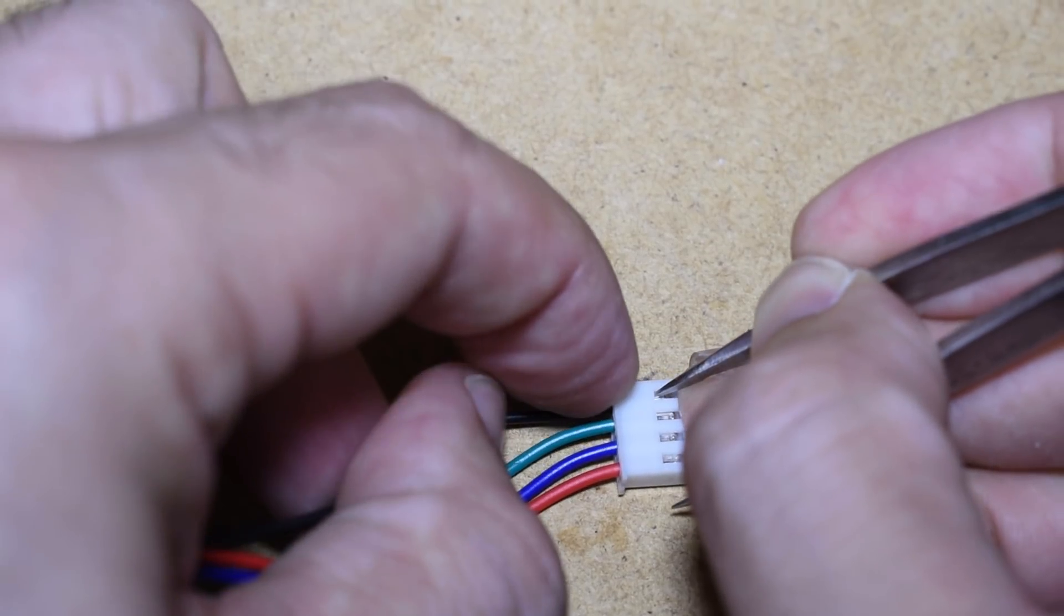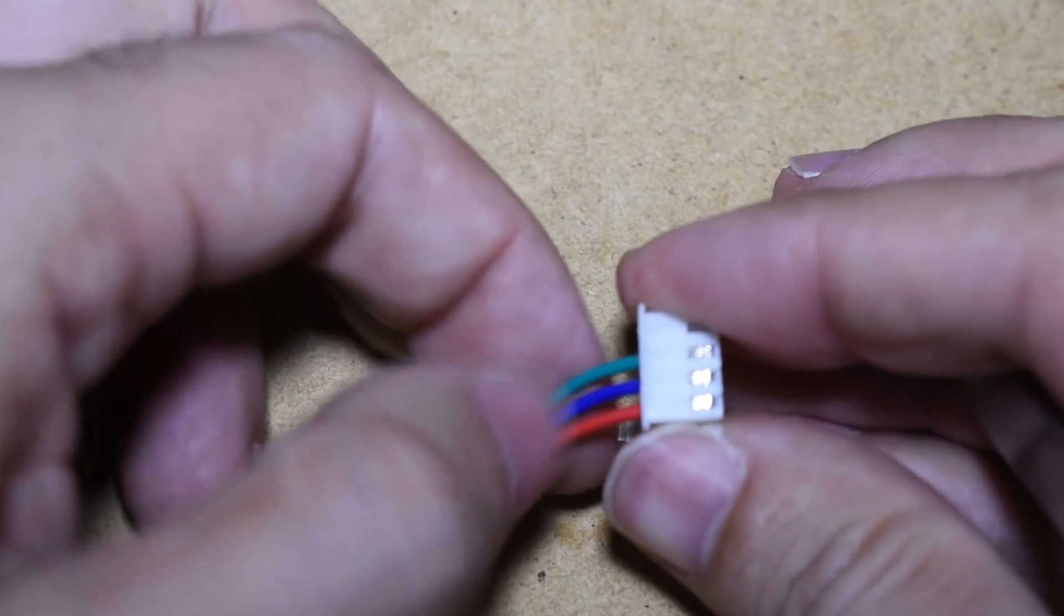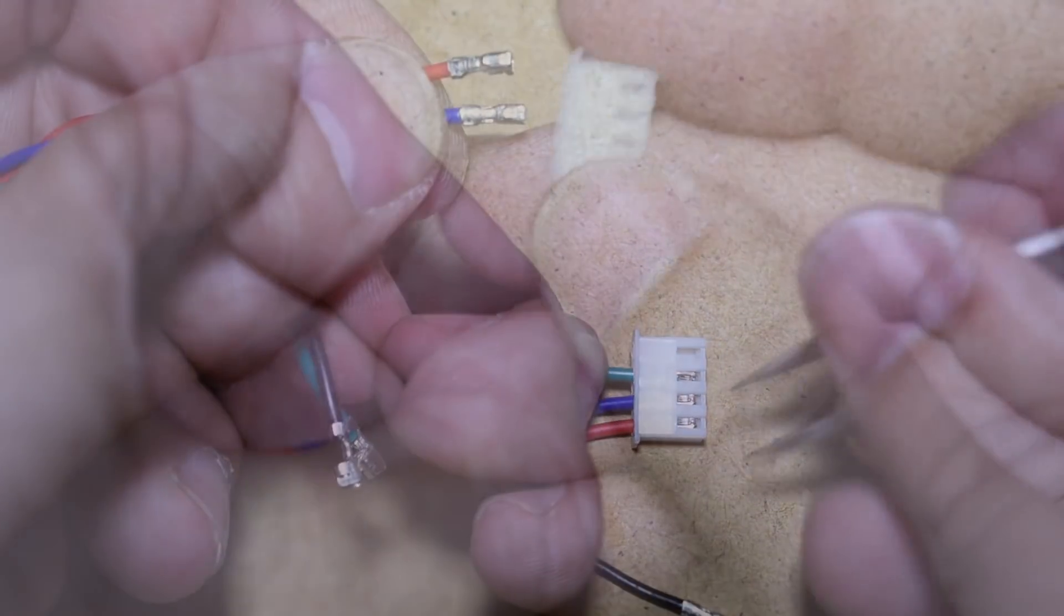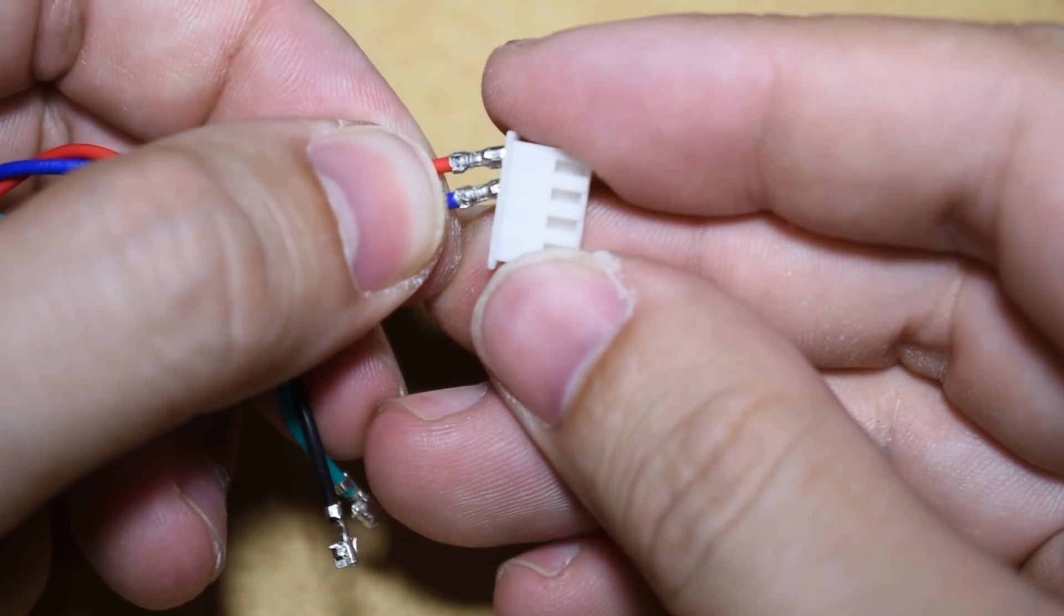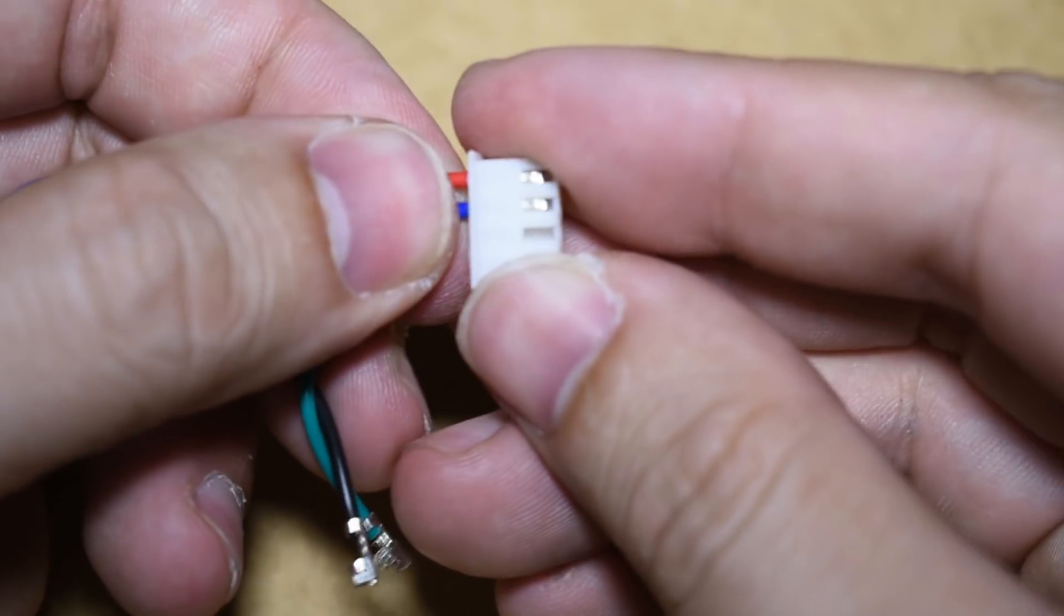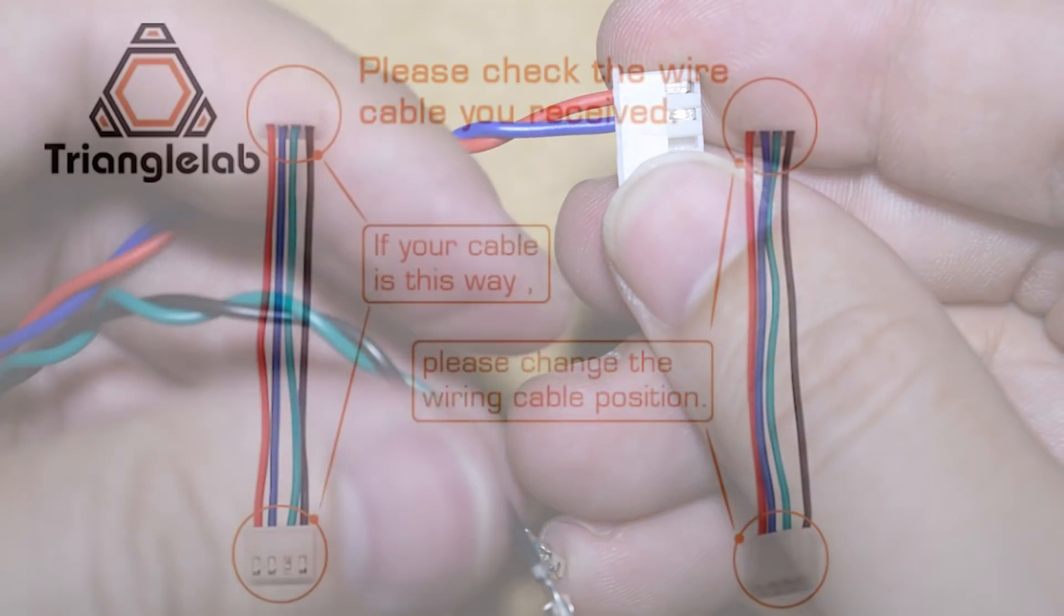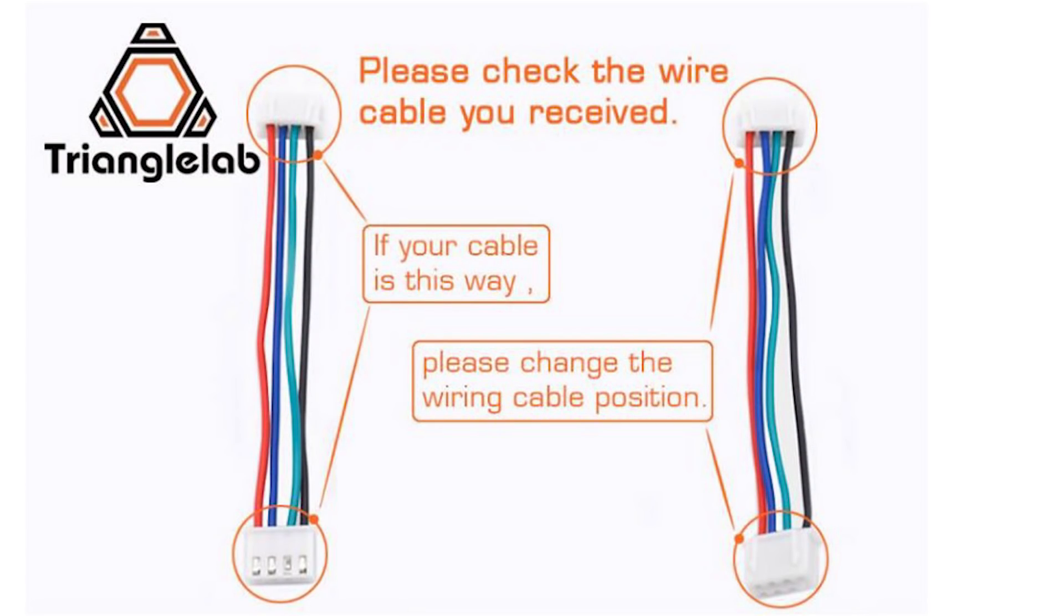Use a thin tool and press slightly on the lock pins and pull the wire out. Once you place the wires back in, confirm that they are secure. The correct cable looks like this.